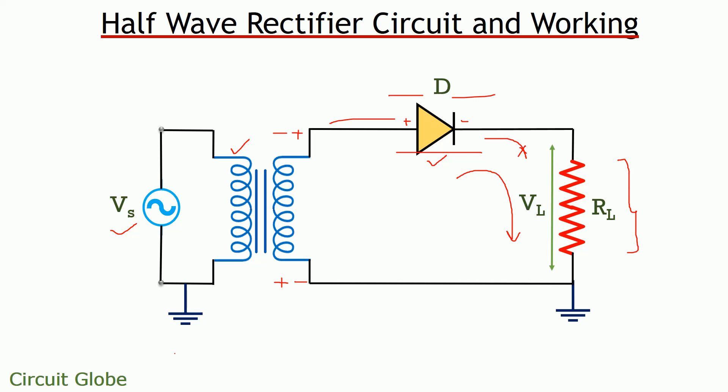This is the reason why it is said to be a half wave rectifier because it rectifies only one half of the signal applied to its terminal. Let's now have a look at the waveform representation of a half wave rectifier.